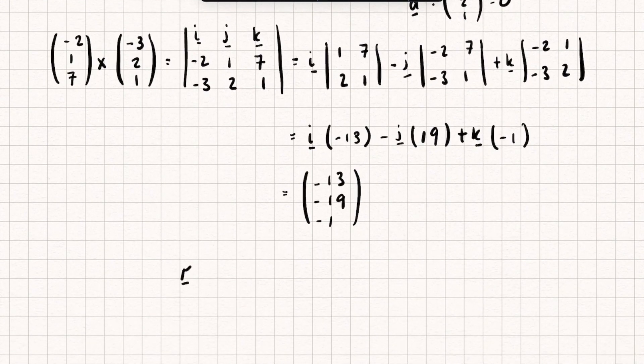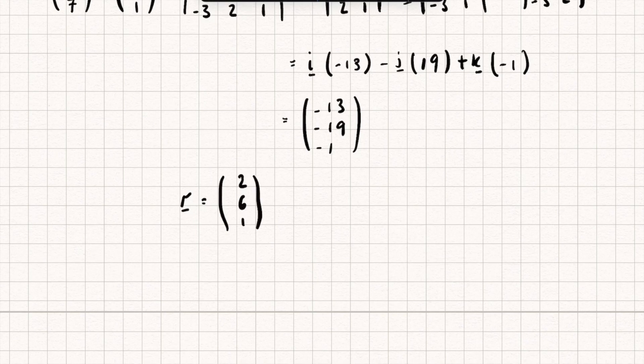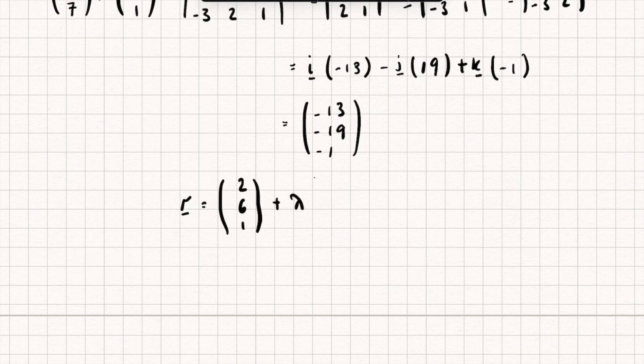And so now I can say this new line that's perpendicular to both and passing through the point (2,6,1) is going to be (2,6,1) plus some scalar multiple of this new direction vector, so (-13,-19,-1). And that is our answer.